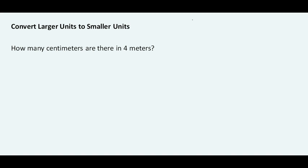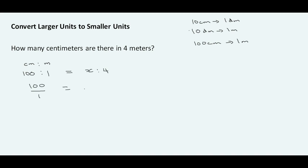How many centimeters are there in 4 meters? We have 10 centimeters making up 1 decimeter, and 10 decimeters making up 1 meter, so thereby 100 centimeters make up 1 meter. Centimeters to meters is a 100 to 1 ratio. Using the equal ratio approach, this gives us X to 4. Creating the fraction: 100 over 1 equals X over 4. Cross-multiplying: 1 times X equals 100 times 4, so X equals 400. Therefore, 4 meters is equal to 400 centimeters.